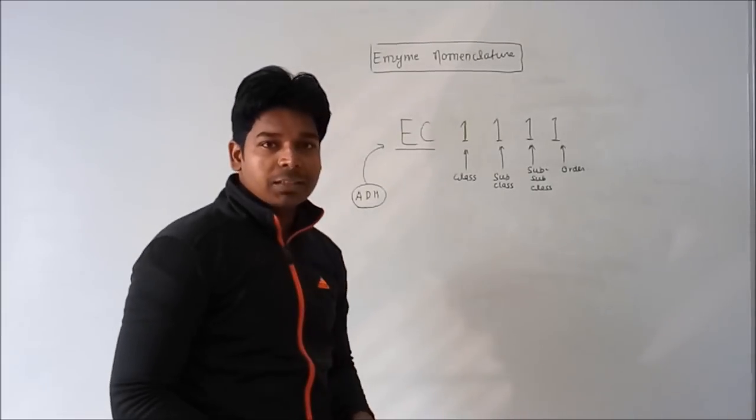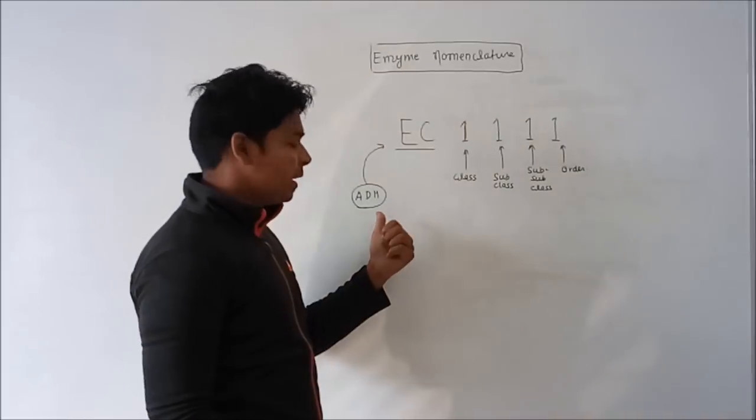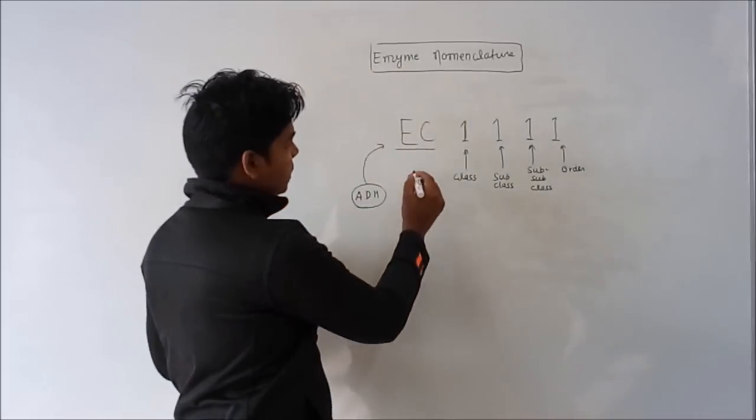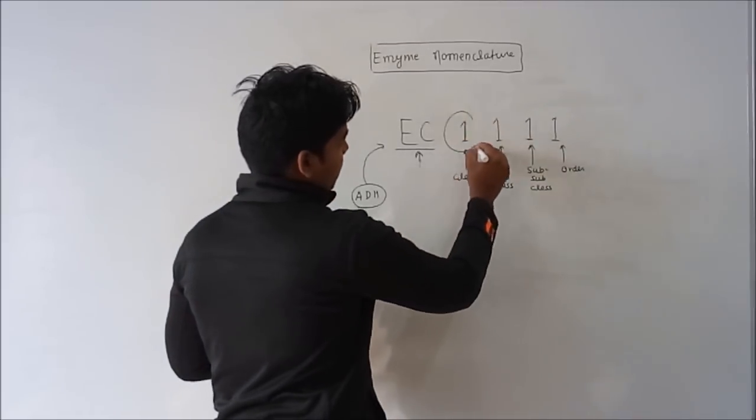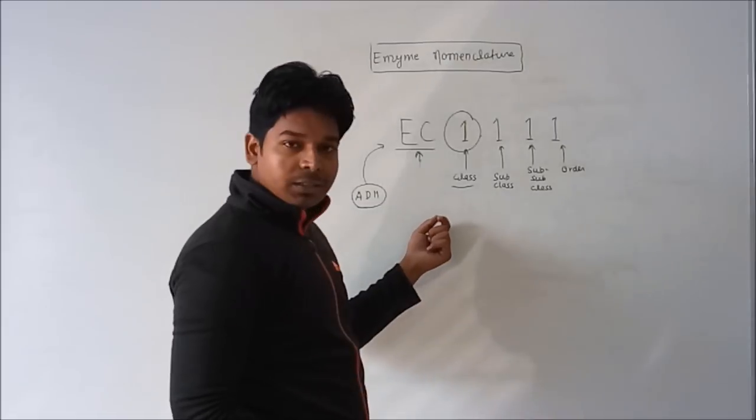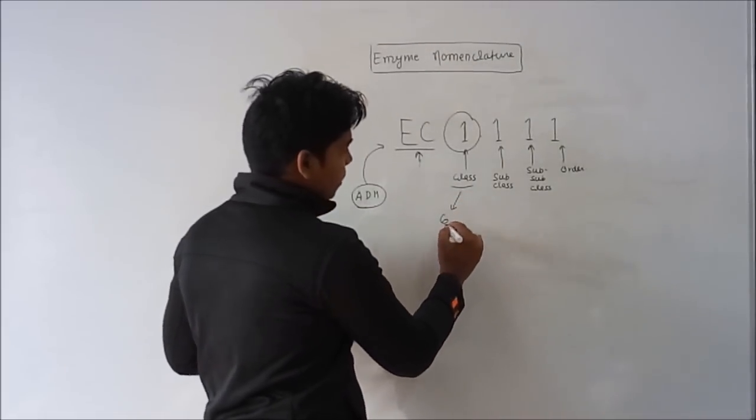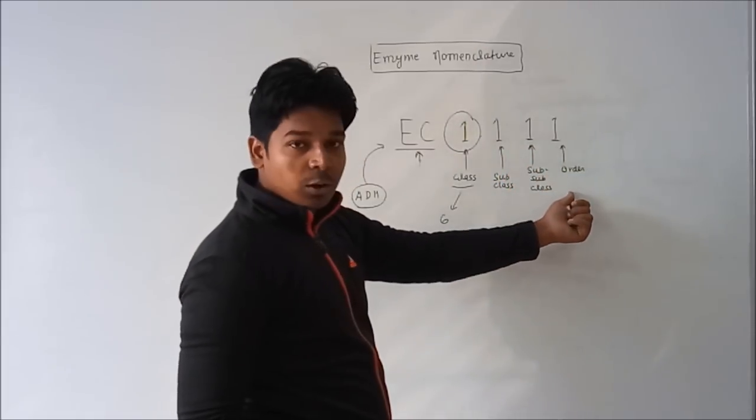So let's discuss enzyme nomenclature. Enzyme nomenclature, you can see here hydrogenase enzyme. You can see this is the enzyme classification EC. The first number denotes the class. In enzyme classification or enzyme nomenclature, class is divided into six groups. This is the subclass, this is sub-subclass, and this is the order.